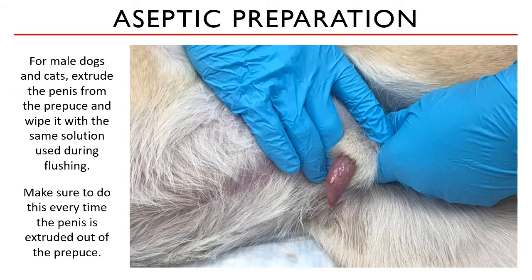For male dogs and cats, you need to extrude the penis from the prepuce for cleaning and aseptic disinfection. Wipe the penis with a gauze moistened with the same solution used for flushing. Do not use alcohol — this is a mucous membrane that is usually inside the body, and alcohol will desiccate the lining. Do not use it.